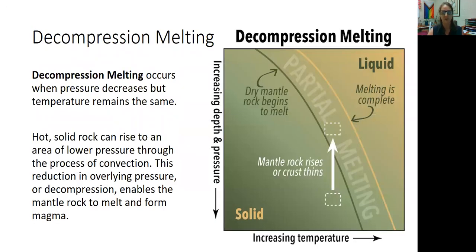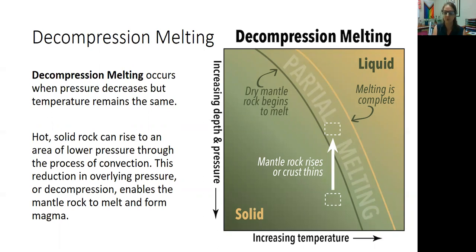When we talk about these different ways, we are going to use this graph. On this graph, the x-axis is increasing temperature — it gets hotter and hotter as you move to the right. The y-axis is depth and pressure, so as you go down this graph, you're getting deeper and deeper into the earth with more and more pressure.